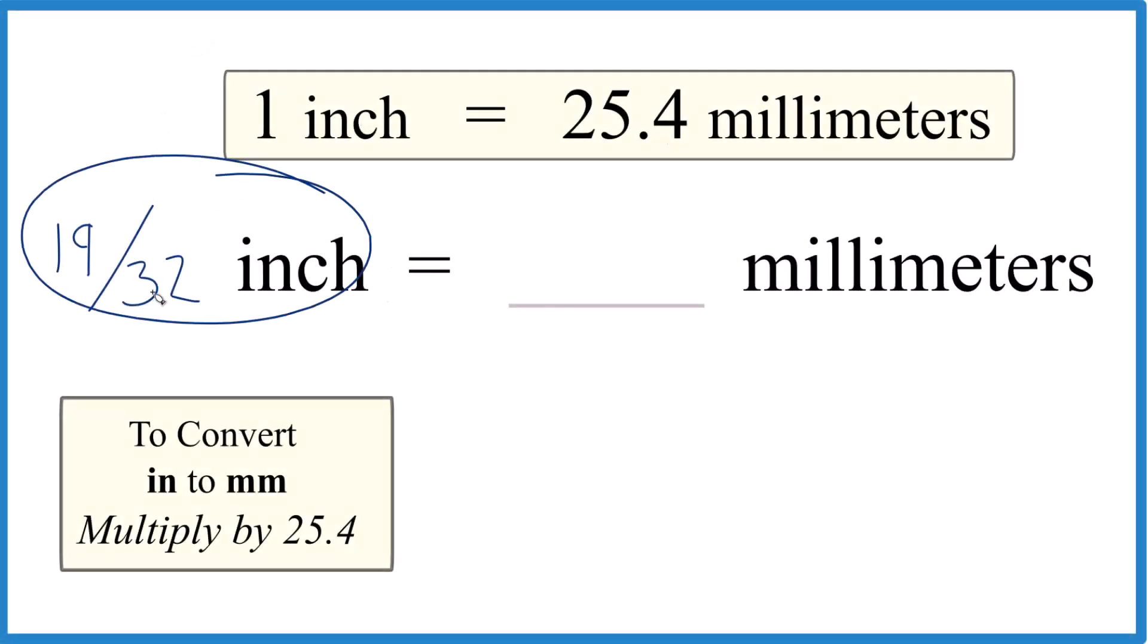So if you have 19/32 of an inch here and you want to get to millimeters, here's how you do it.